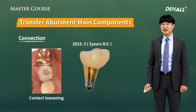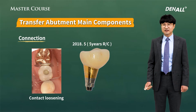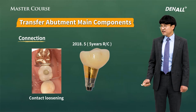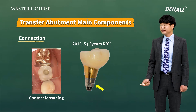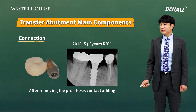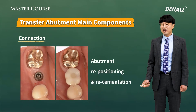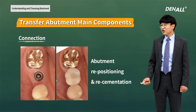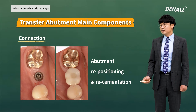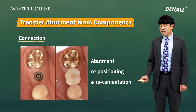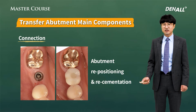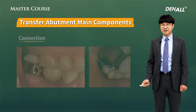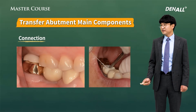Let's look at a clinical case. Over time, the contact is lost. Due to the type of prosthetics, it was easily removed. Can you see the hex form indicated by the arrow? At a lab, the contact was modified, and using the hex structure, the abutment was repositioned easily. If the abutment was a non-hex type, repositioning would have been very difficult. But as it was a hex abutment, repositioning was done pretty easily, contact was modified, and re-cementation was performed. Proper contact with the adjacent tooth was recovered.